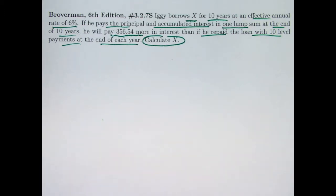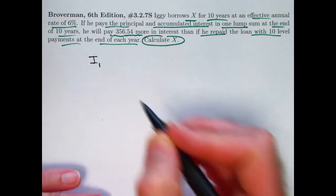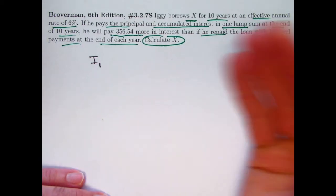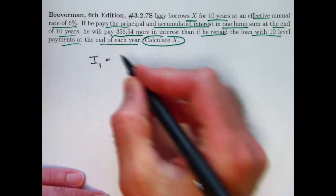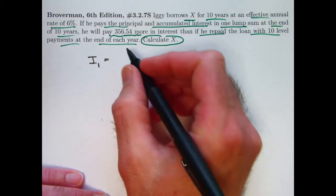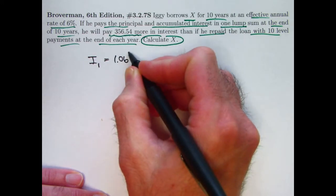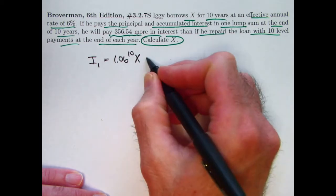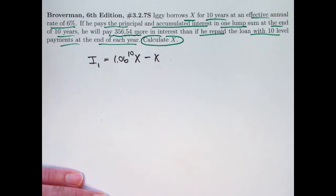I think this problem is simple enough that we can do it without bothering to draw a timeline. First of all, what is the interest paid with plan 1? Let's call that I1. It would be the amount Iggy pays after 10 years minus the amount X that he borrowed. If it's a 6% effective annual interest rate, then the amount that he's going to pay at the end of 10 years is 1.06 to the 10th power times X. Subtract X itself, and there is the interest paid on plan 1.